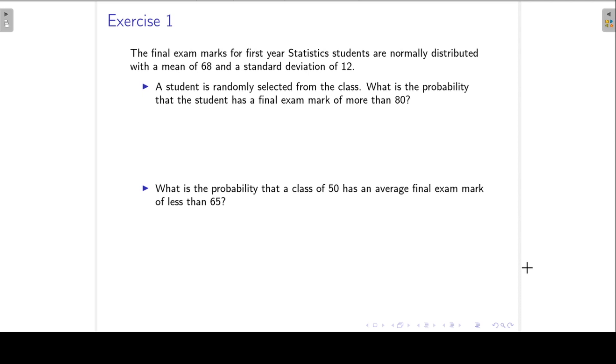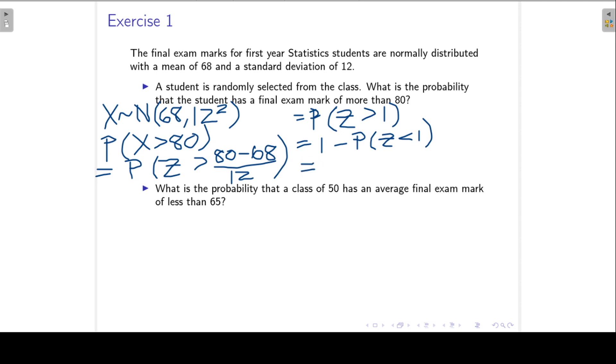We can start by writing down the distribution of X. It follows a normal distribution with a mean of 68 and a variance of 12 squared. We want to find the probability that X is more than 80. The first step would be to standardize, and we find this probability in our tables.